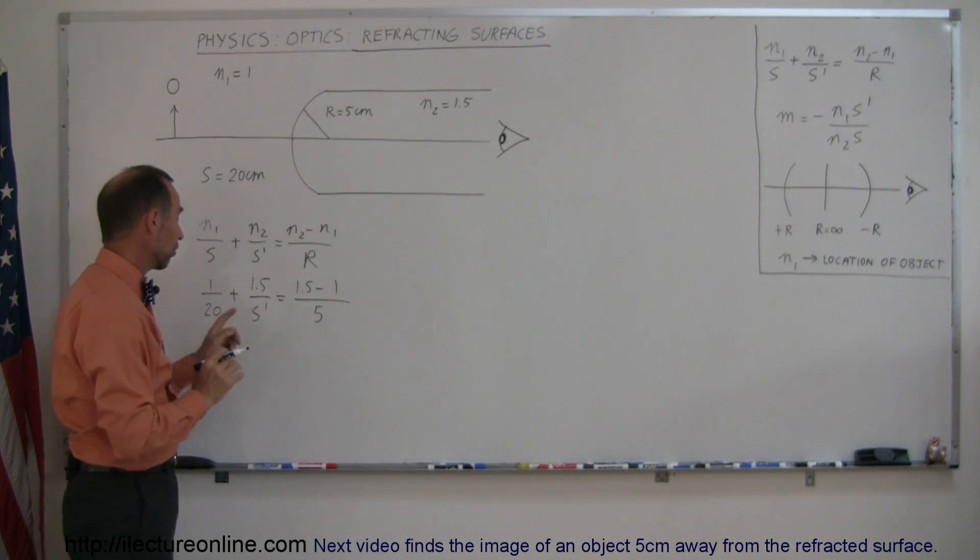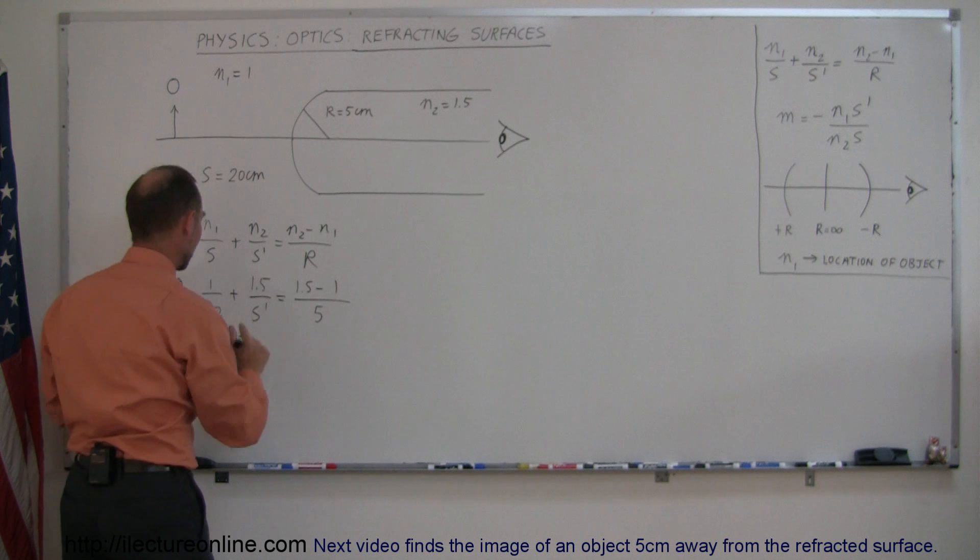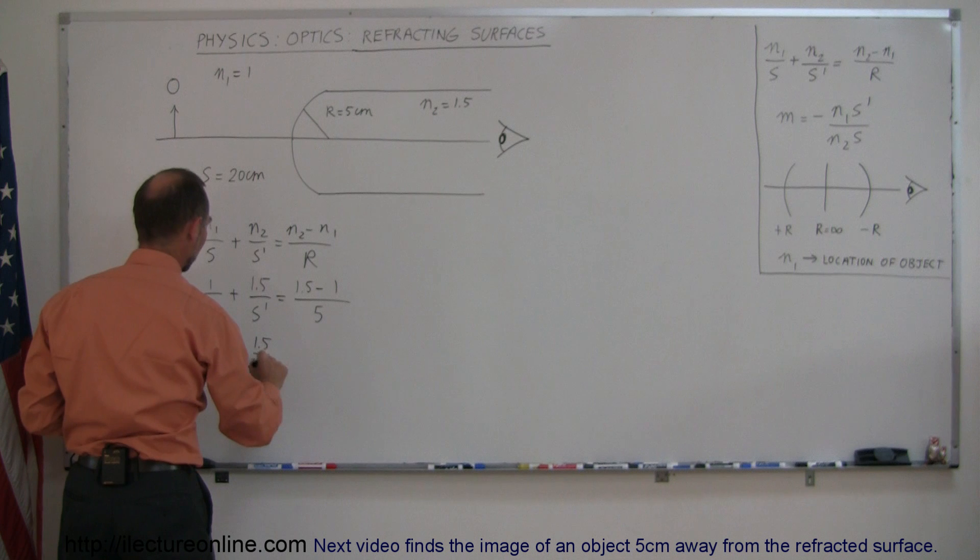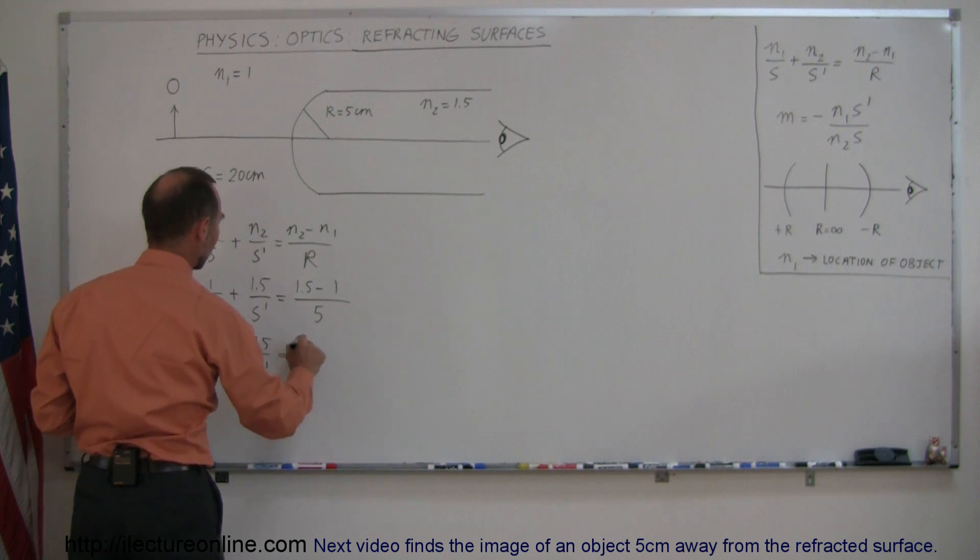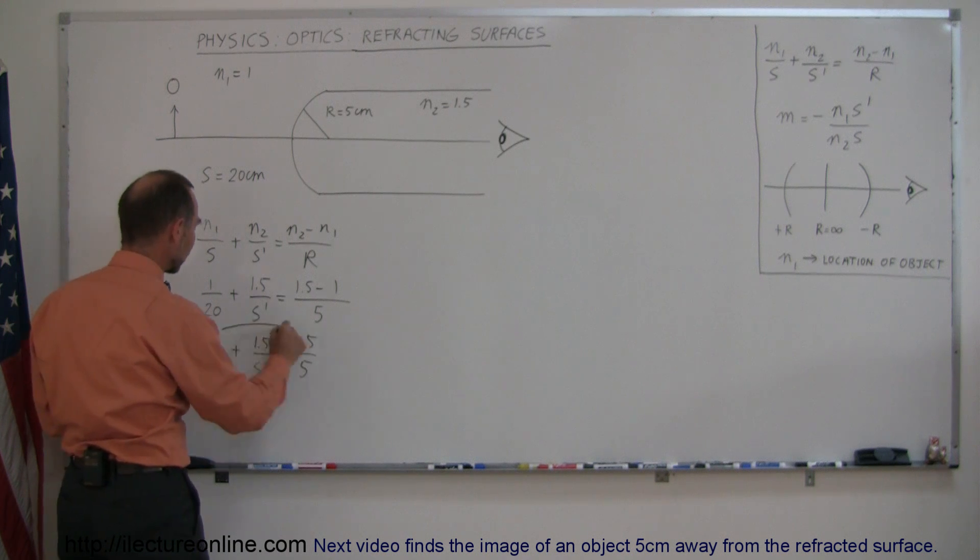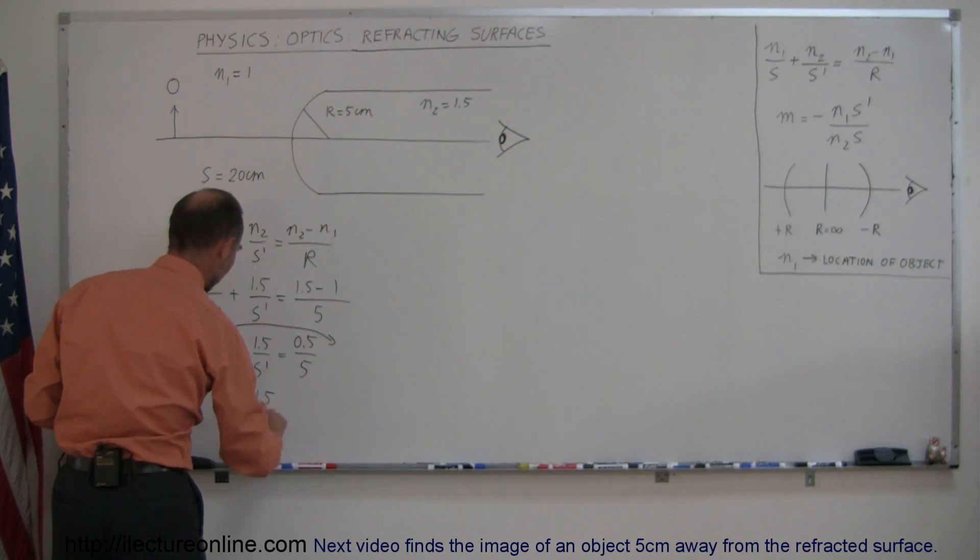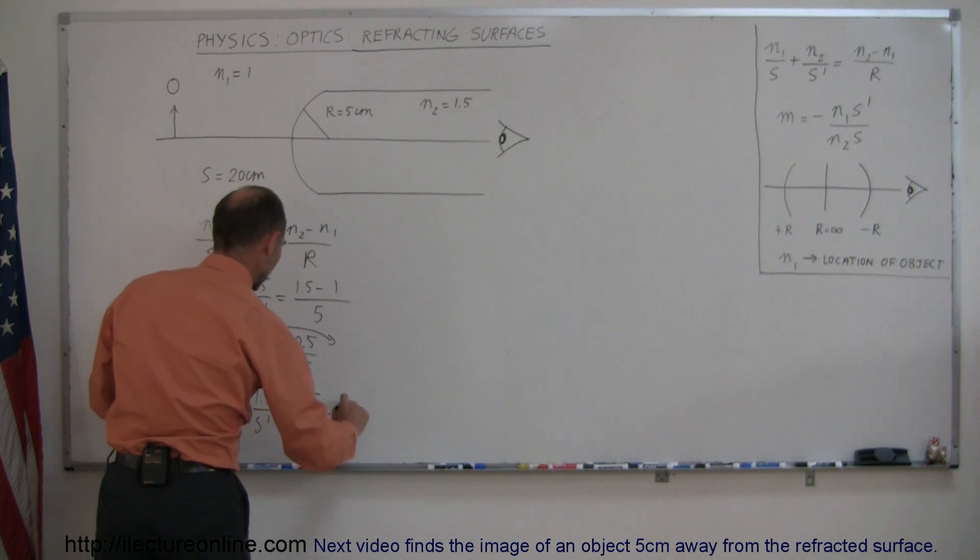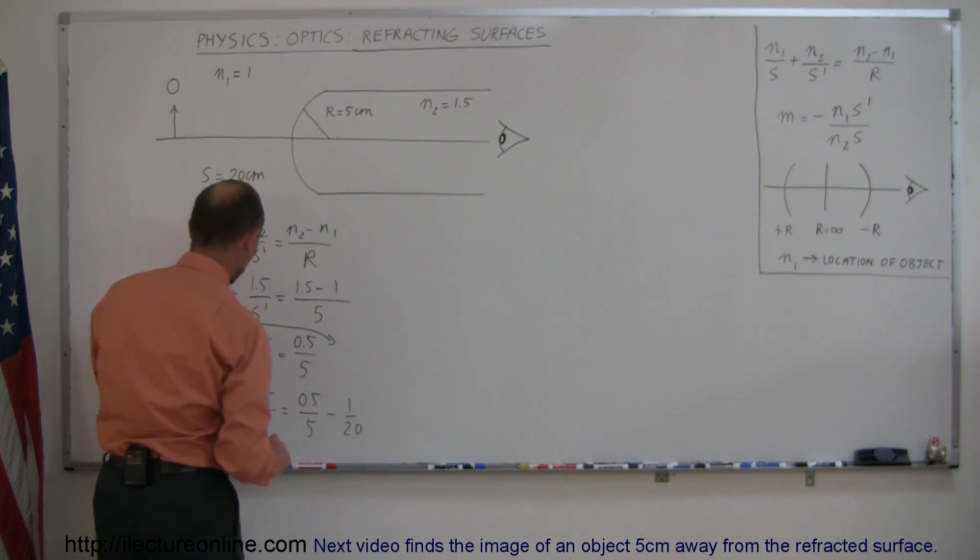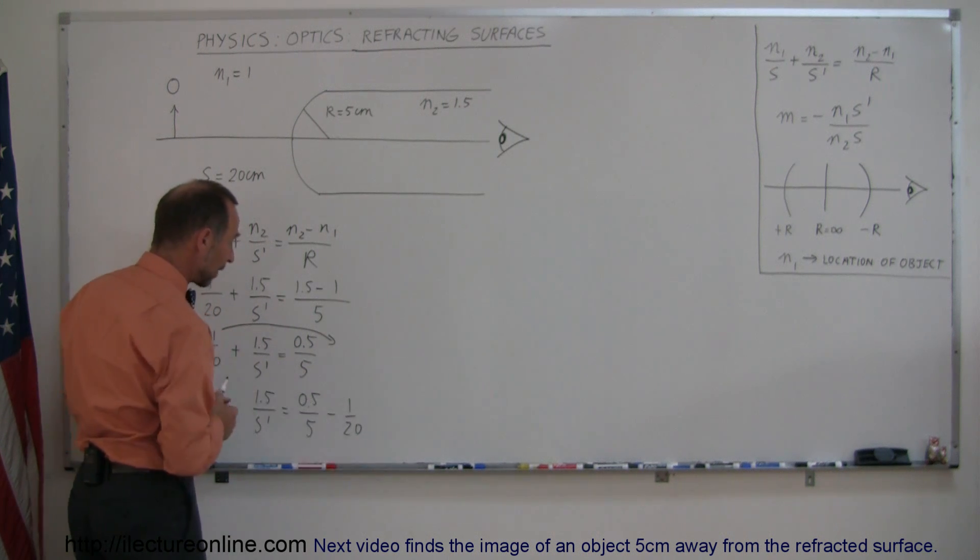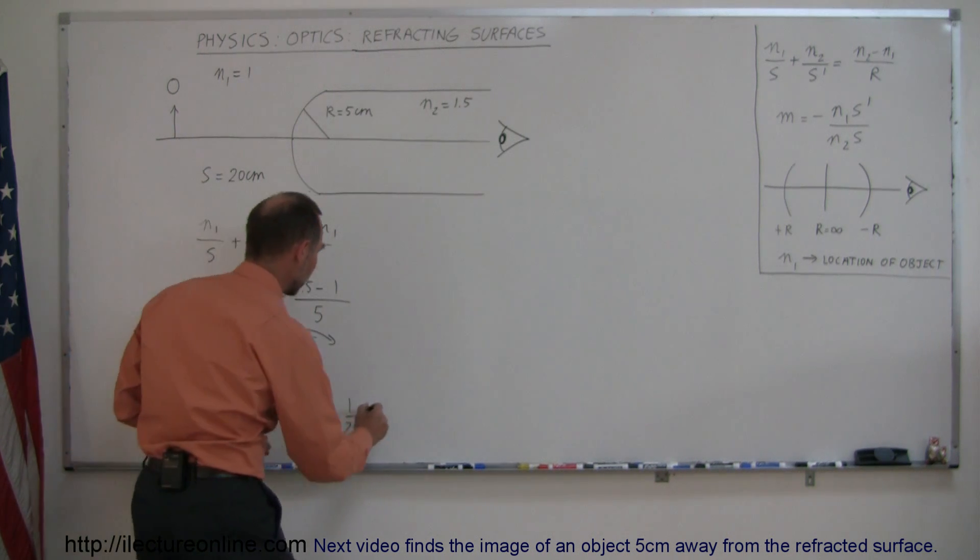All right, now we're ready to go ahead and solve this for S prime. So first, let's simplify this a little bit. So we have 1 over 20 plus 1.5 over S prime is equal to 0.5 over 5. Now, the next thing we can do is move this over to the other side right there. So we have 1.5 over S prime is equal to 0.5 over 5 minus 1 over 20, because when you cross the equal sign, of course, that becomes negative. Now, when we want to add the right side, we have to find the same common denominator, which is 20. So let's do that.